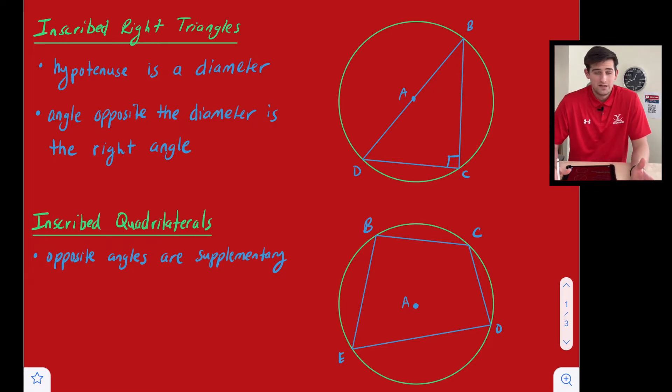And we can know the converse of that to be true as well. If we are given the diameter of a circle, we know that that is the hypotenuse of a right triangle. So since that's the case, the angle that's opposite of the diameter will be the right angle. So we know that angle is going to be 90 degrees.